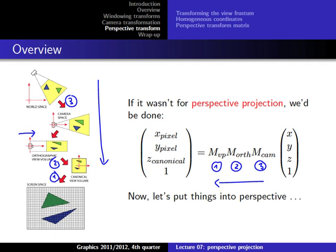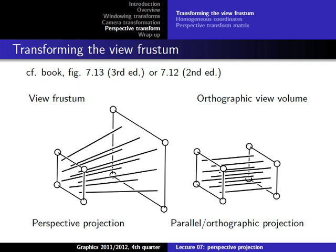Let's go through the last step, which is the most complicated: the perspective projection — this transformation from the view frustum to the orthographic view volume. Let's see what we have to do when we want to do this kind of transformation. For example, if we have the view frustum and we have two triangles here which are about the same size, we need them to be transformed in a specific way.